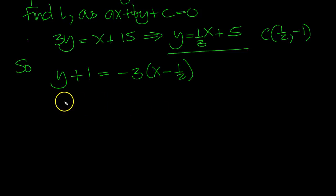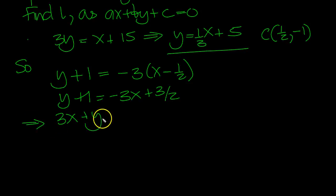So y plus 1 equals minus 3x plus 3 over 2. So 3x plus y, and then it's minus 3 over 2 plus 1 minus minus 1 half.